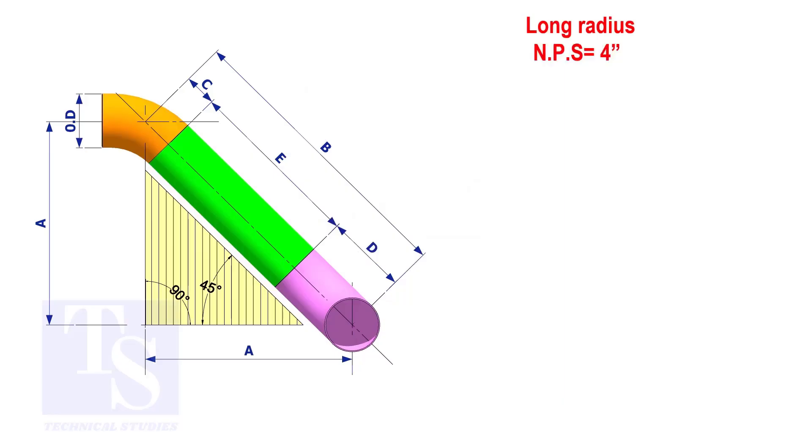Assume that the elbows are long radius. Calculate the true length of the pipe.